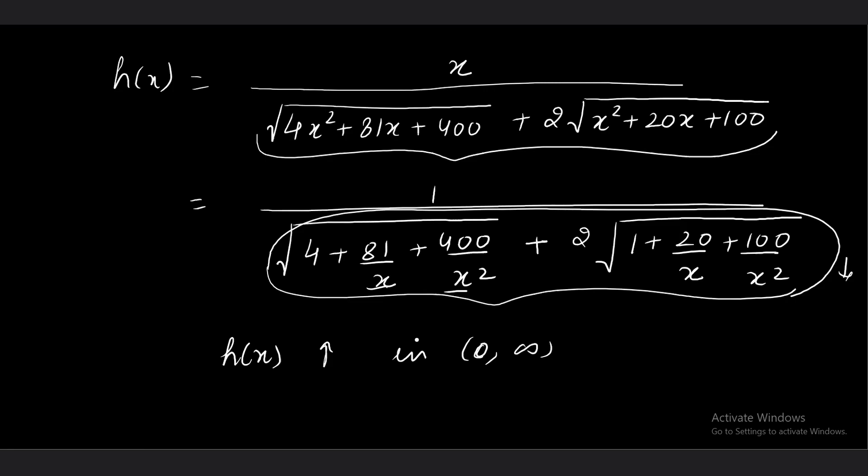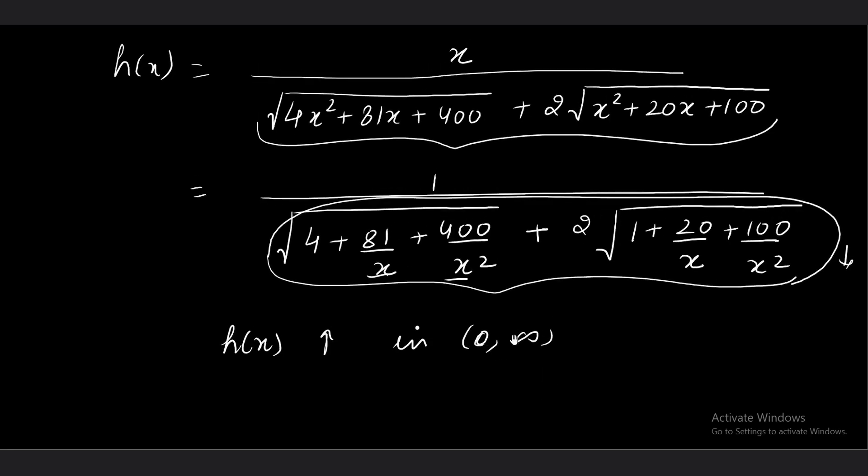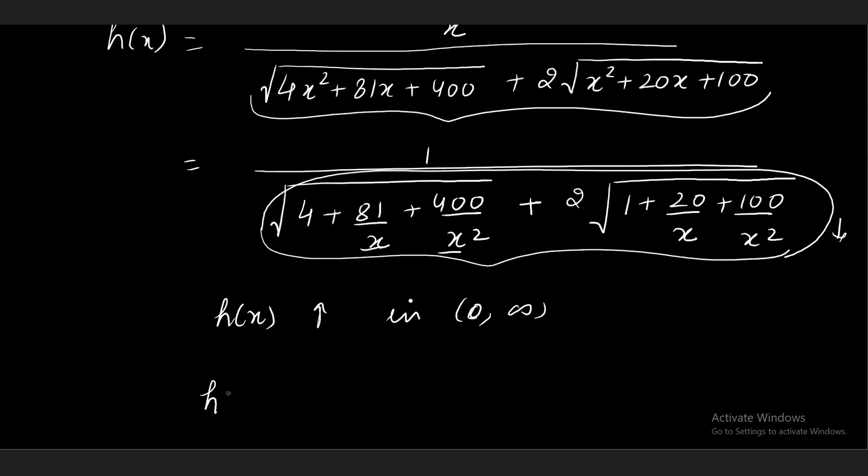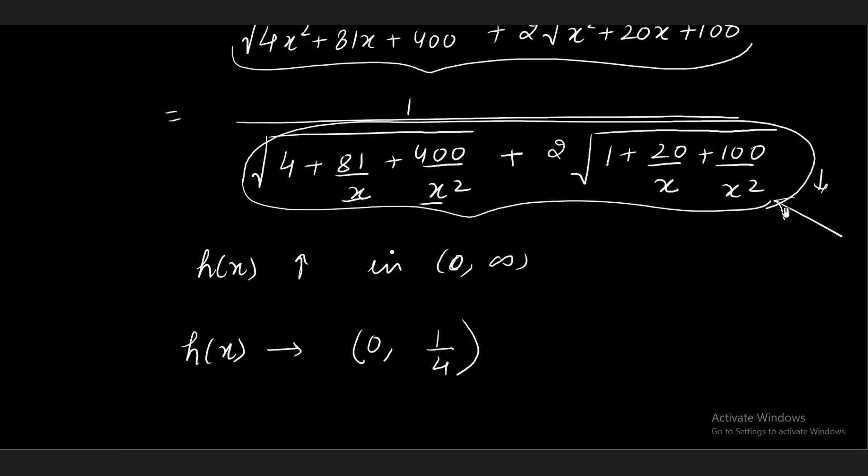The function is increasing in 0 to infinity because function f(x) is defined only for x positive real, so 0 to infinity is the domain. And in that domain the function is turning out to be increasing. Now if the function is strictly increasing, then it means it is going to take the least value at 0 and the maximum will be at infinity. So we will talk about h(x) when we are keeping it at 0. It is taking the minimum value 0. When you take it towards infinity, you get 1 by root 4 plus 2, that means 1 by 2 plus 2, that is 1 by 4. What about 0? Is the function defined at 0? Yes, the function is defined at 0.